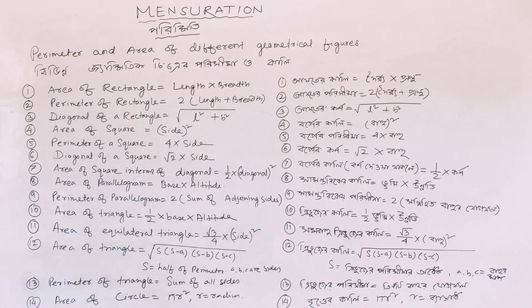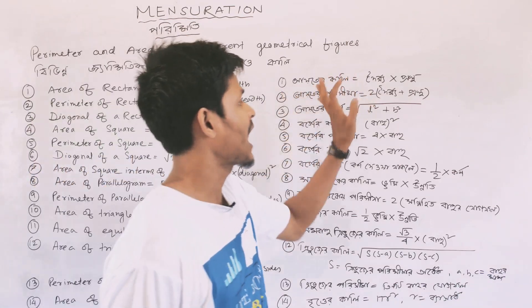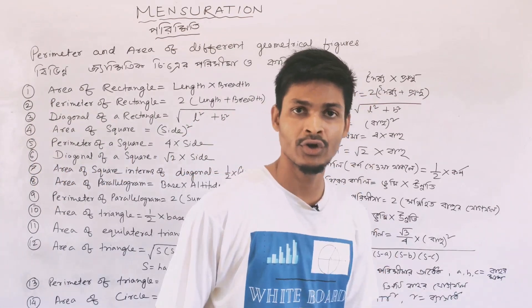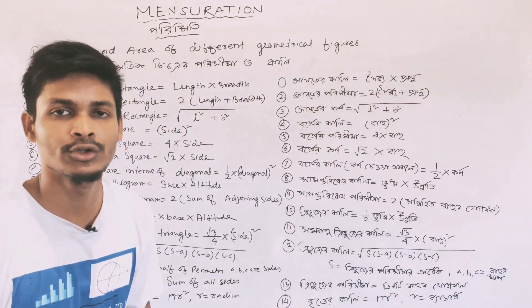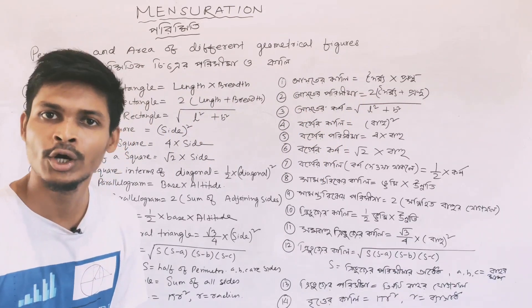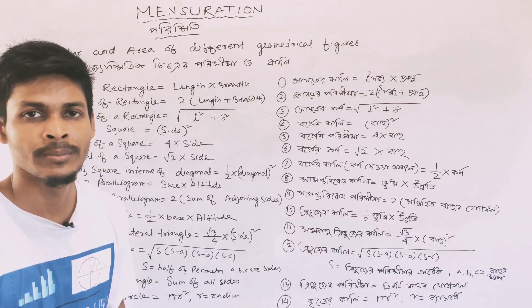The first area is the area of rectangle. We know the rectangle, which is in Bangla. The formula is length into breadth.